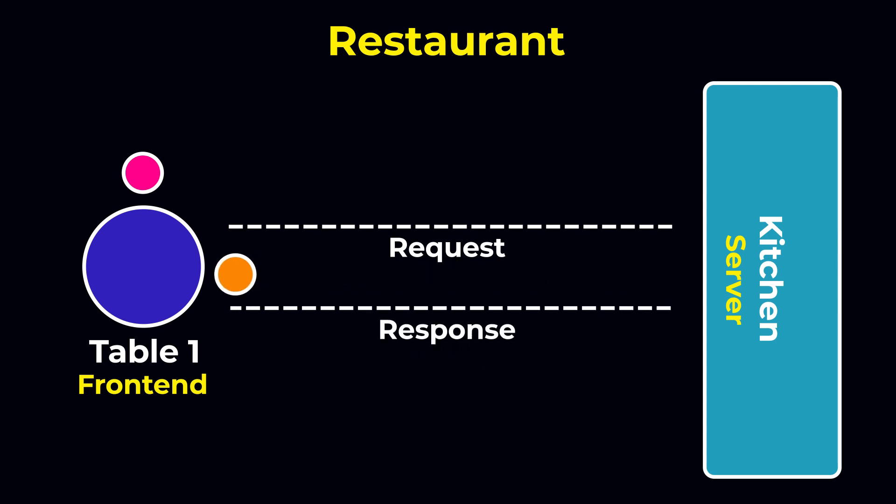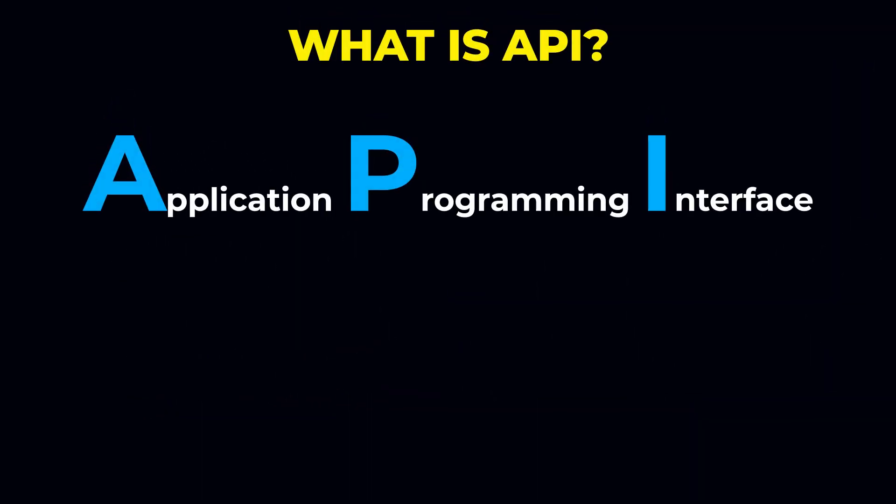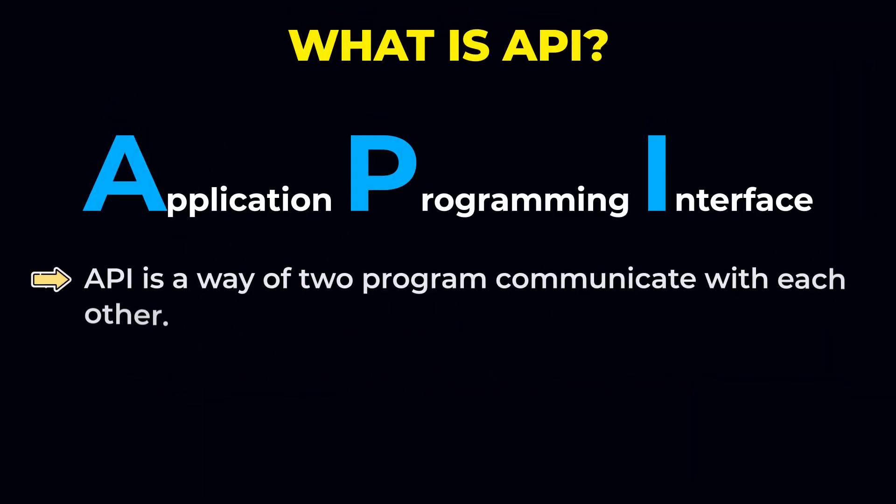So now you understand what is API. API is a way for two programs to communicate with each other. Let me explain with another real-world example.